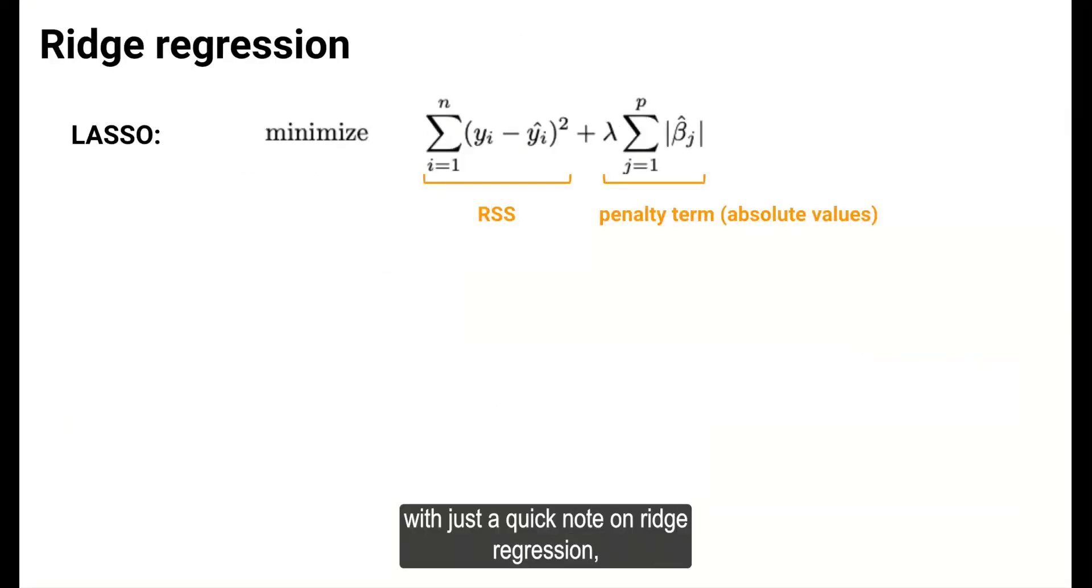We'll end the video with just a quick note on ridge regression, which was mentioned earlier as another shrinkage method. With LASSO, we modify the least squares criterion from linear regression by adding a penalty term that contains absolute values of the estimated coefficients.